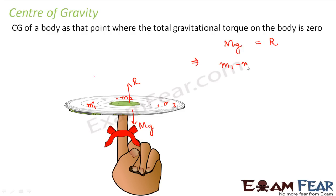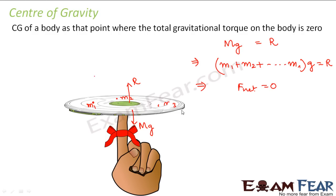Now, what is this M? M is nothing but the sum of the masses of the particles which constitute this system. So under this situation the net force acting on the body is zero. Now there will be a torque due to each of the forces M1g, M2g, M3g, and so on. For each of these particles there will be a force acting towards the center of the earth — that is M1g, M2g, M3g — and each of these forces will give rise to a torque.